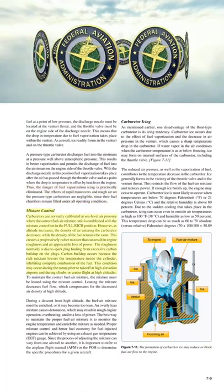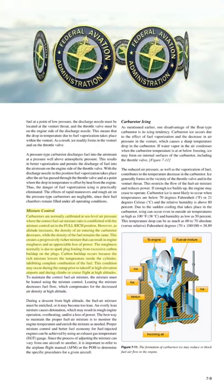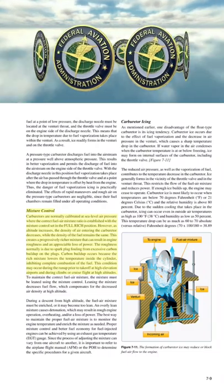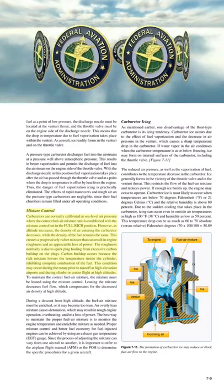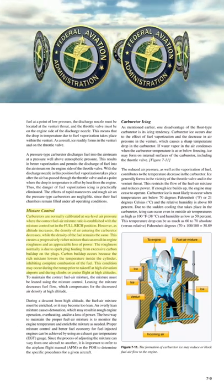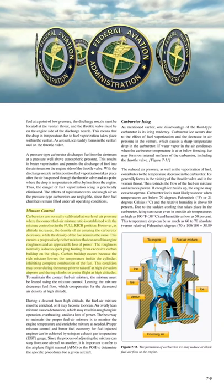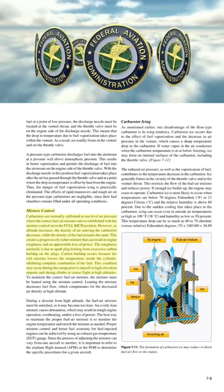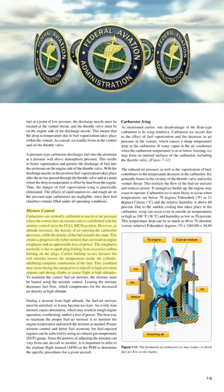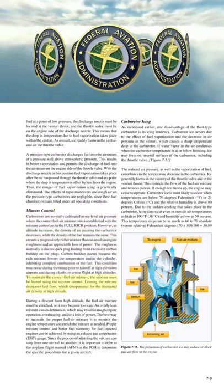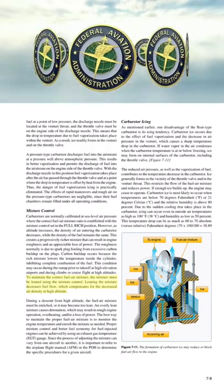Carburetors are normally calibrated at sea-level air pressure where the correct fuel-air mixture ratio is established with the mixture control in the full-rich position. However, as altitude increases, the density of air entering the carburetor decreases while the density of the fuel remains the same. This creates a progressively richer mixture that can result in engine roughness and an appreciable loss of power. The roughness is normally due to spark plug fouling from excessive carbon buildup, as the rich mixture lowers cylinder temperature and inhibits complete combustion. To maintain the correct fuel-air mixture, the mixture must be leaned using the mixture control, which decreases fuel flow to compensate for the decreased air density at high altitude.